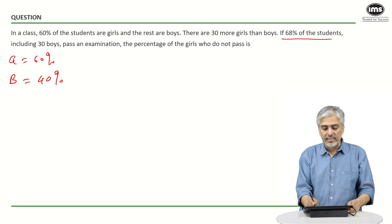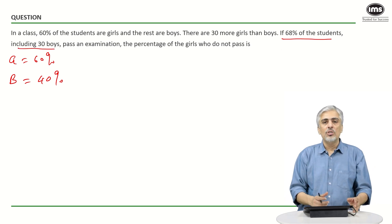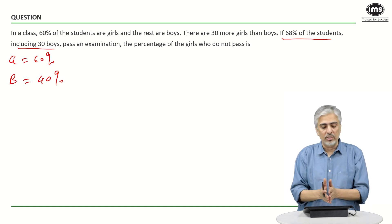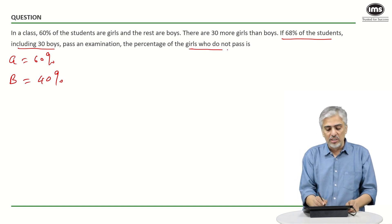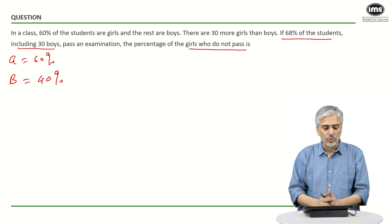68% of the students, including 30 boys, pass an examination. So totally, 68% of the students passed, in which the number of boys who passed were 30. Find the percentage of girls who did not pass, which means failed.